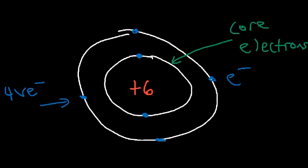Elements in group 4A typically have four valence electrons. Alkali metals, found in group 1A, contain one valence electron. Alkaline earth metals in group 2A contain two valence electrons. The halogens in group 7A contain seven valence electrons. So you can find the number of valence electrons based on which group the element is located in.